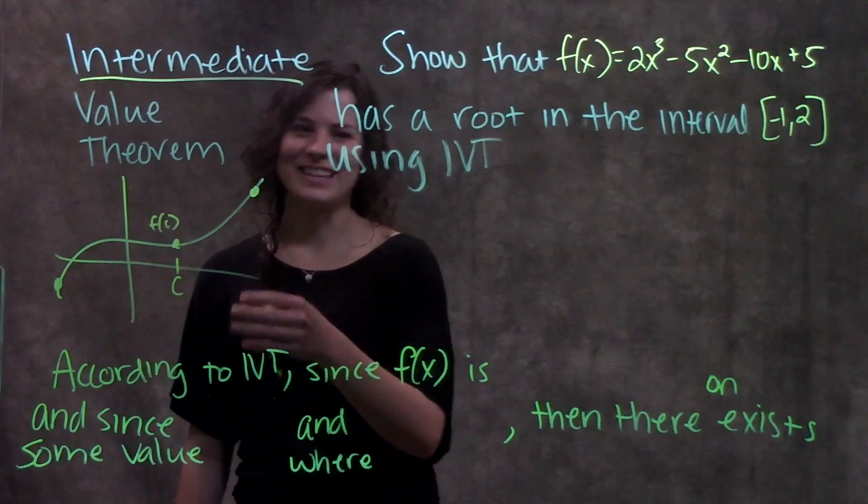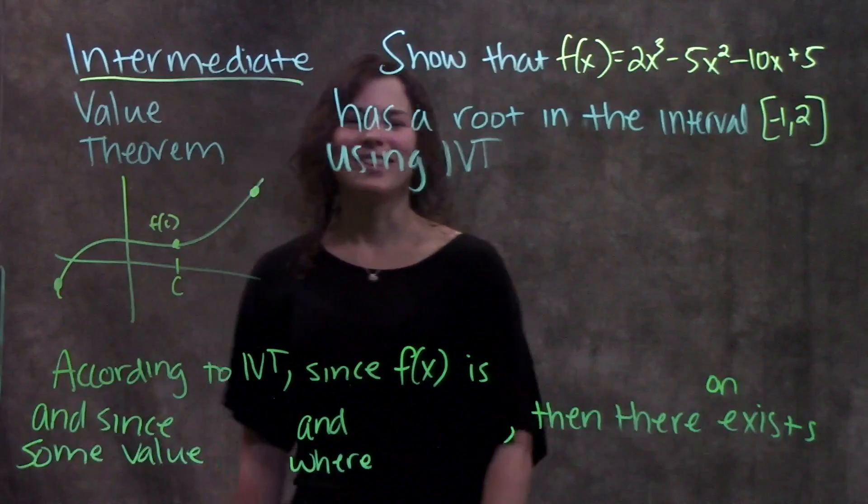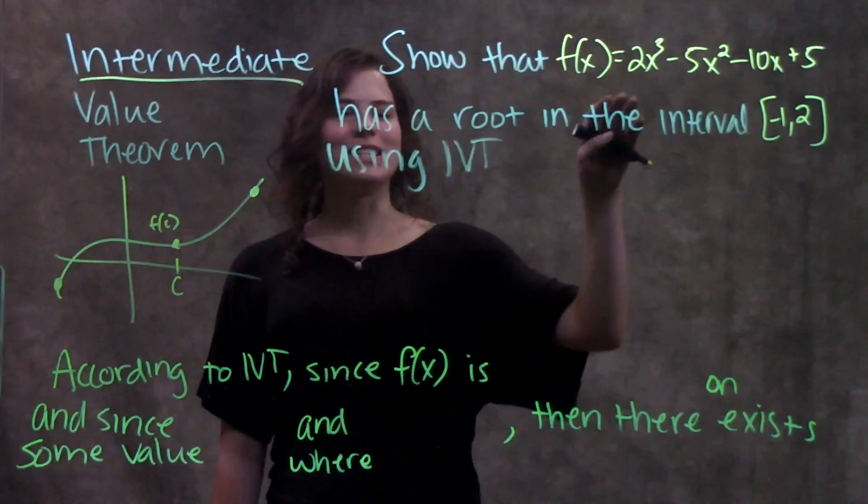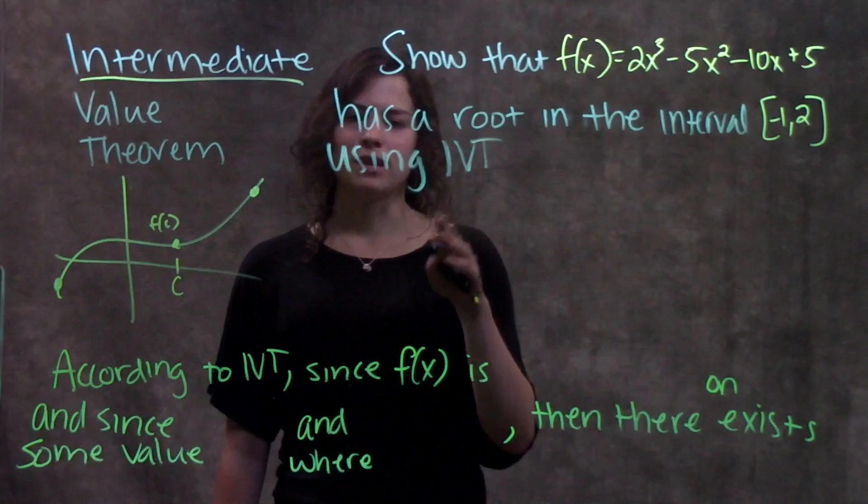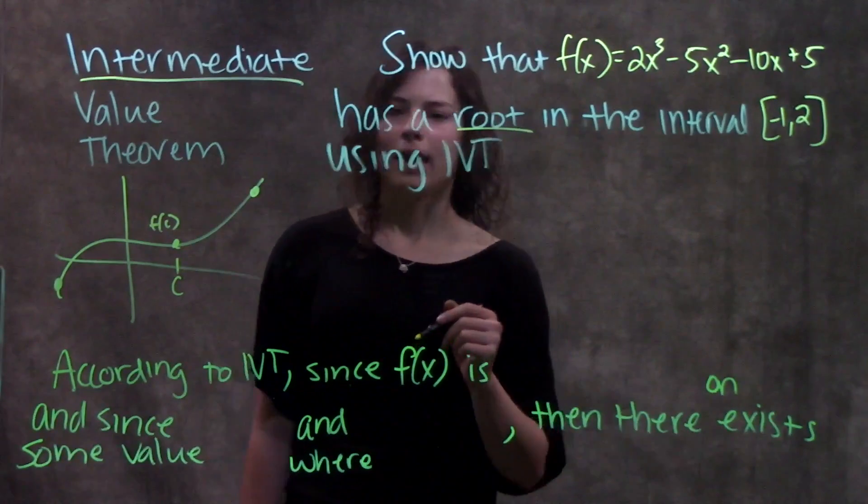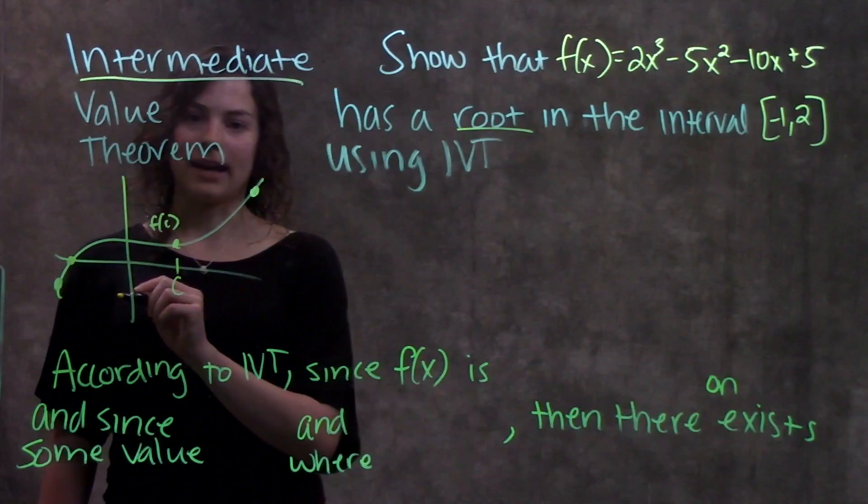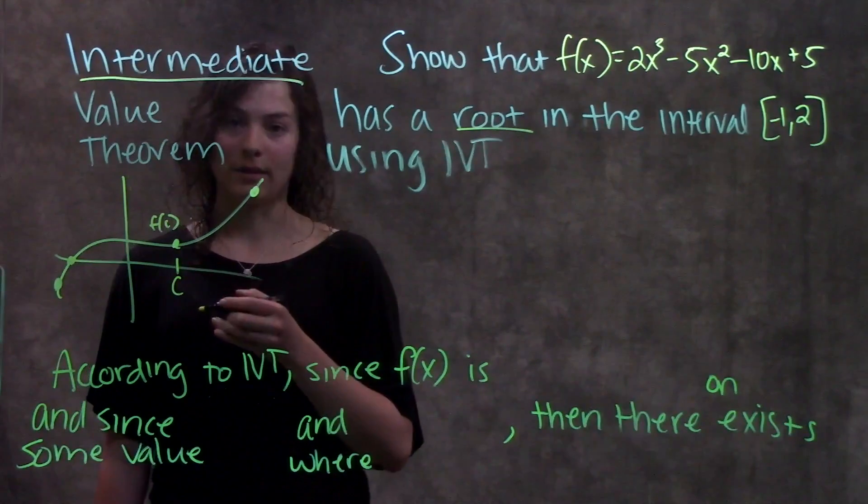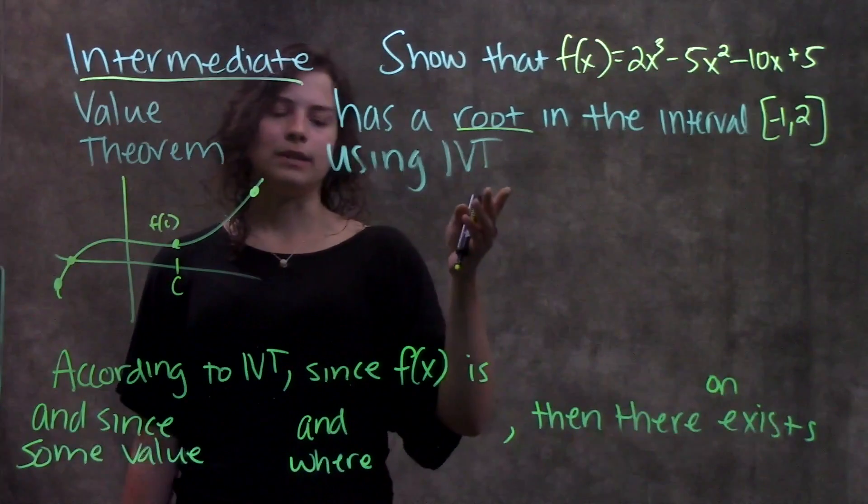Let's go ahead and use this in an application and use it in this problem. This example says show that this function has a root in the interval negative one to two using the Intermediate Value Theorem. First, a root, if you remember back to algebra, the root of a function is just wherever it crosses the x-axis, wherever y is equal to zero. We're going to prove that there's a root in this interval using IVT.